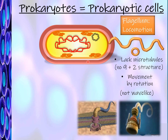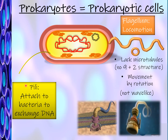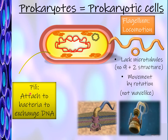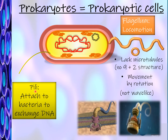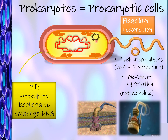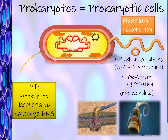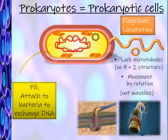Prokaryotes can also have another long extension called pili. The pili's function is to help bacteria attach to another bacterium so they can exchange genetic material — usually plasmids, which contain genetic information for antibiotic resistance. When one bacterium passes its plasmid to another, that bacterium becomes resistant to the antibiotic, making it more difficult to kill.